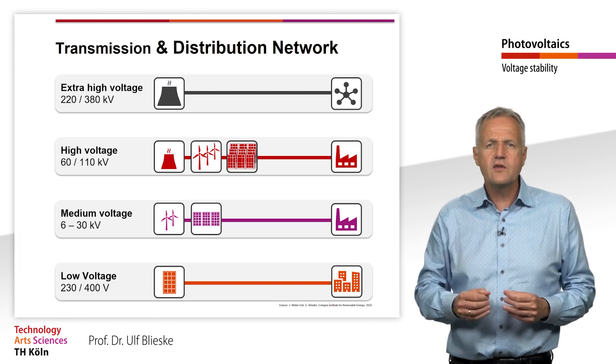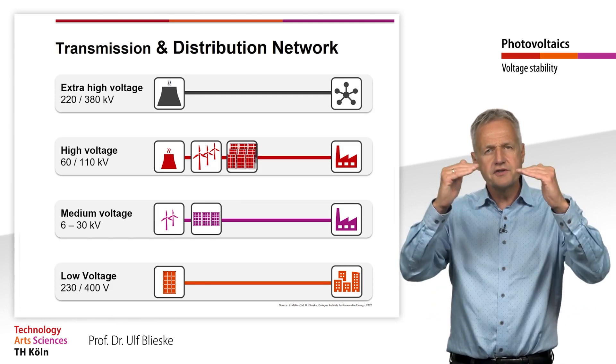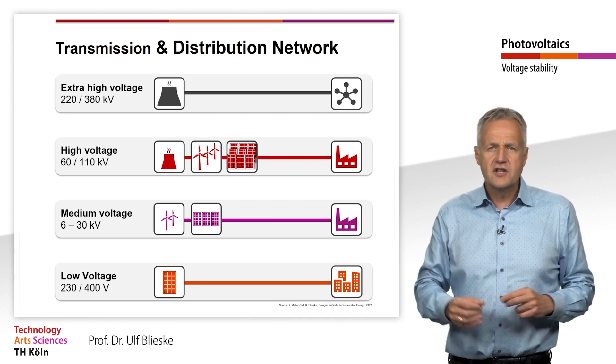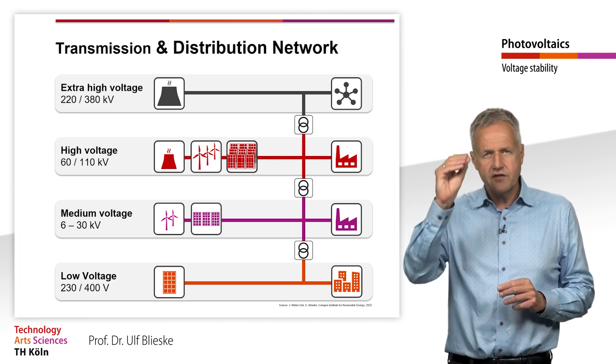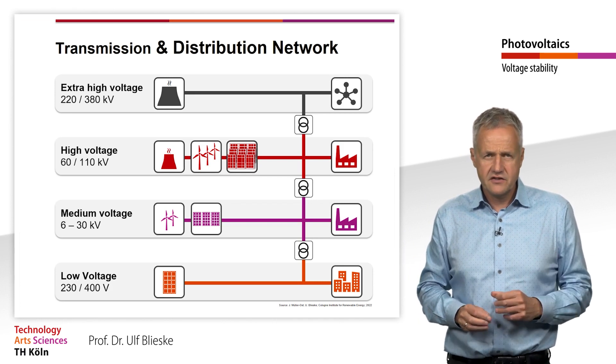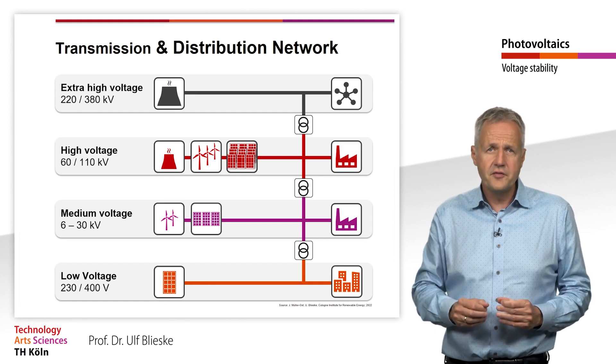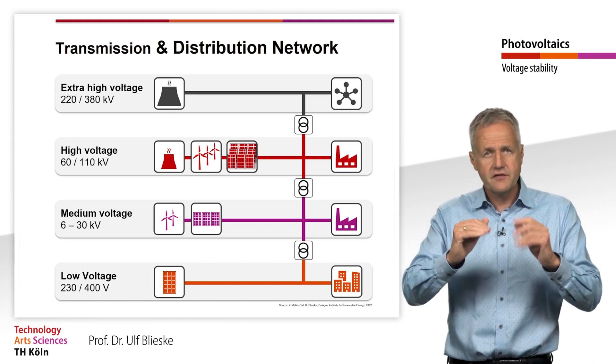Here you can see once again the different voltage levels of a power grid. The voltage levels are coupled by the transformers of the substations or local network stations, which transform the voltage between the two respective voltage levels.